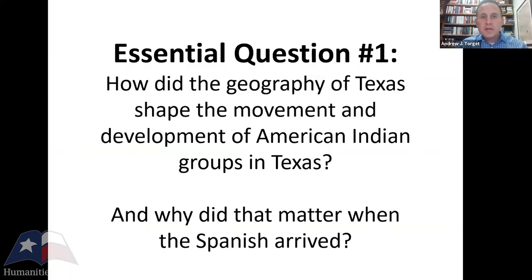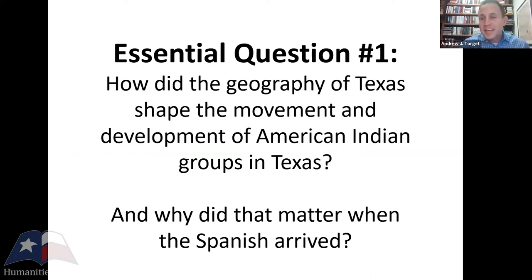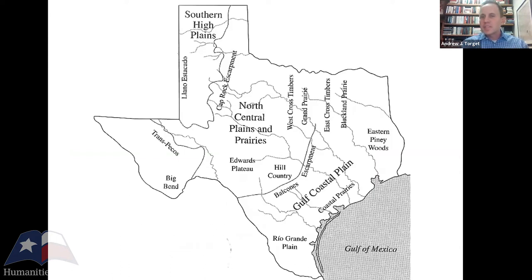We want to frame each section with an essential question that guides how we talk about this stuff. For this first section, the essential question is about geography and how it connected to American Indian groups in Texas: How did the geography of Texas shape the movement and development of American Indian groups in Texas? I always connect this to geography — the very first thing I tell my students is write this down: geography matters. I've had students joke they're going to put it on t-shirts because I use it so frequently.